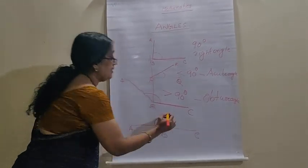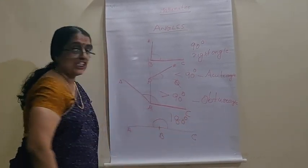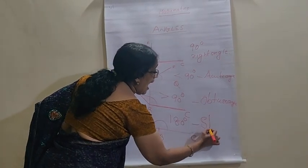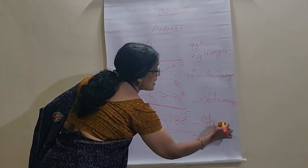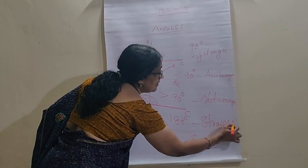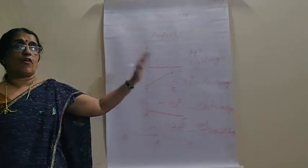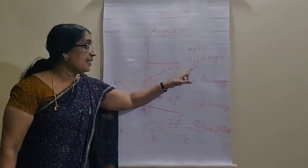It is called, this measurement is 180 degrees. So, we call this angle as, straight angle. So, today, we learn the different forms of angle. What are they?